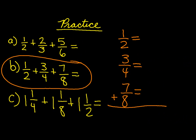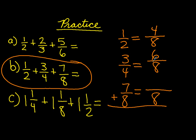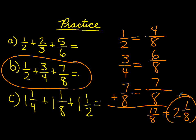Now let's take a look at letter B: one-half plus three-fourths plus seven-eighths. Again, rewrite your numbers vertically and come up with a common denominator. Add them all up — seventeen-eighths. Eight goes into seventeen two times with one left over. So we have two and one-eighth.